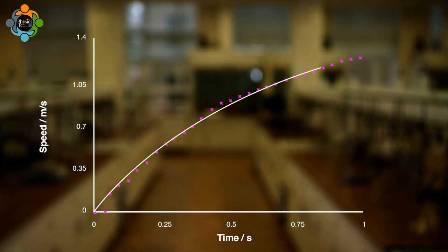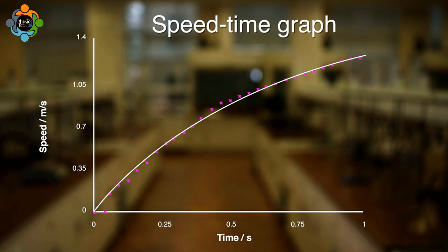The data points should be joined with a smooth line of best fit which passes through the origin. The final thing to do is to add a title to the graph. Now the graph is complete. It is possible to see the sections where the car has changed speeds.